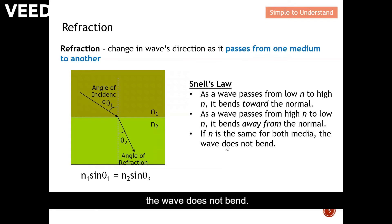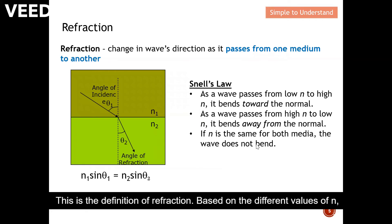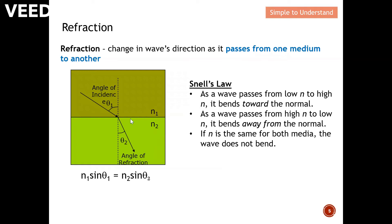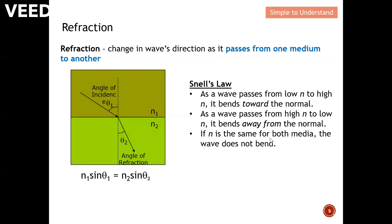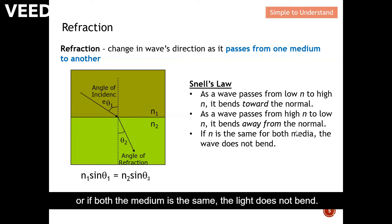If both media have the same refractive index n, the wave does not bend. So the direction of bending in refraction depends on the different values of n — whether it bends towards the normal, away from the normal, or if both media are the same, the wave does not bend at all.